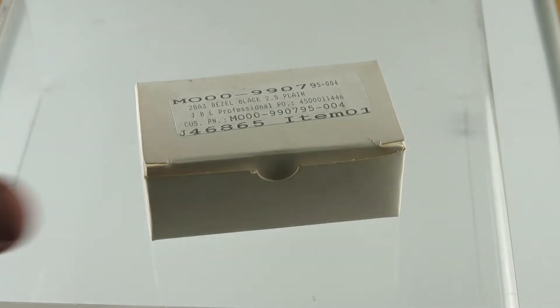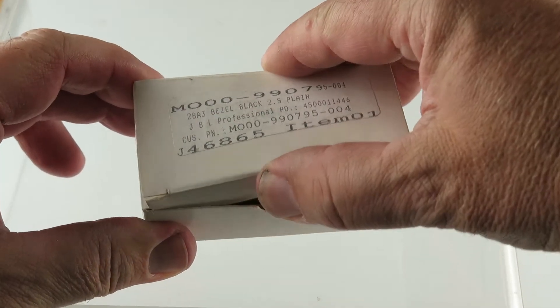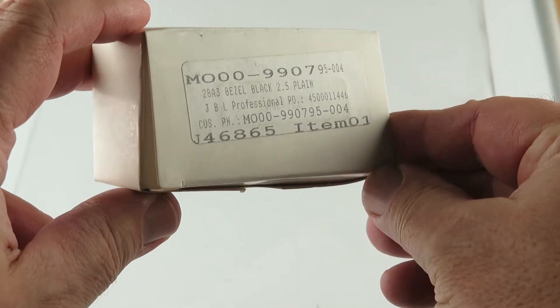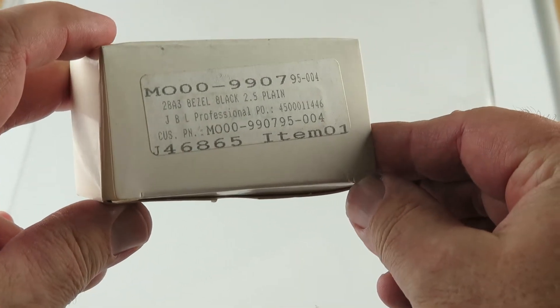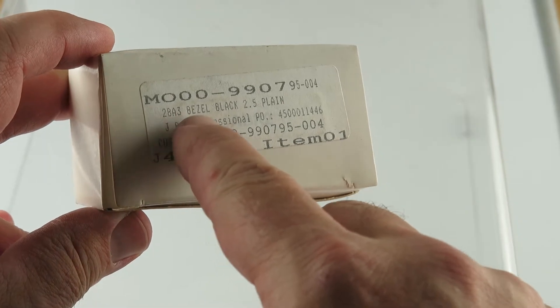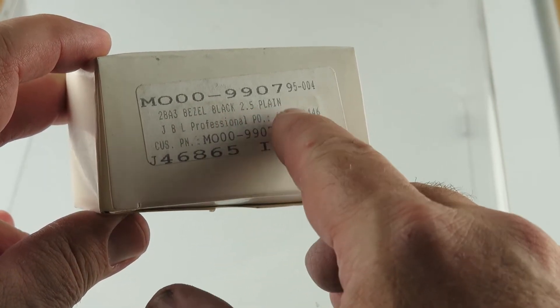Alright, let's get a first look at this bezel. 2B A3 bezel black 2.5 plain.